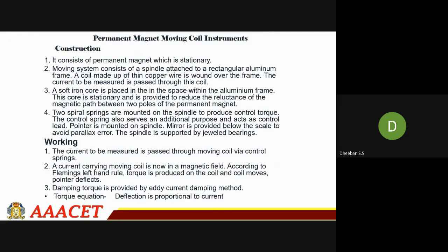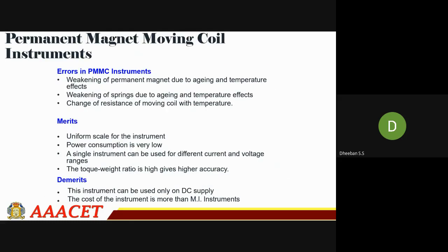Coming to the working: the current to be measured is passed through the moving coil, which becomes magnetized. There is already a permanent magnet present. According to Fleming's left-hand rule, a torque is produced on the coil and the coil moves the pointer, causing deflection. The deflecting torque Td is directly proportional to the current I.